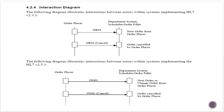Here's the interaction diagram. You have the order placer on one side and the order filler on the other. They're going to use an ORM to make a new order, or they're going to use another ORM to cancel it. That all comes from the ORC1 field. If the ORC1 value is NW, it's a new order, and if the ORC1 value is CA, it would be a cancel.